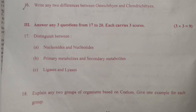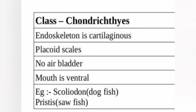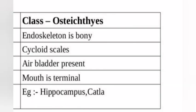Question 16: Write any two differences between Osteichthyes and Chondrichthyes. Class Chondrichthyes: endoskeleton is cartilaginous, placoid scales, no air bladder, mouth is ventral. Examples: Scoliodon, dogfish. Class Osteichthyes: endoskeleton is bony, cycloid scales, air bladder present, mouth is terminal. Examples: Hippocampus, catfish.